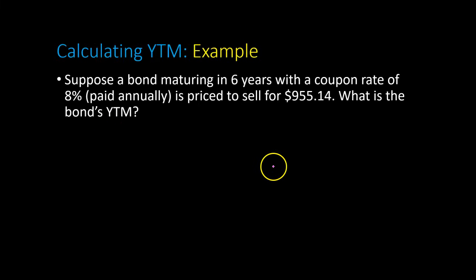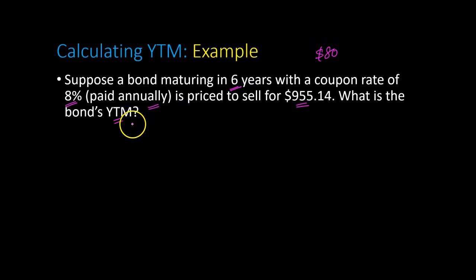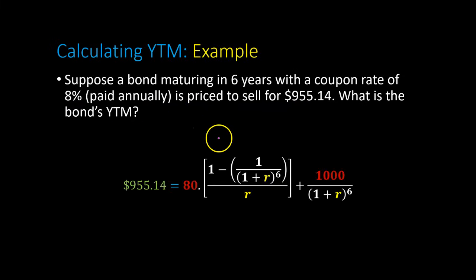So as an illustration, consider the following example. Suppose there is a bond maturing in six years, with a coupon rate of 8% paid annually, and the price of the bond is $955.14. The question is: what is the bond's yield to maturity? You can figure out the coupon payment is $80 based on a face value of $1,000. Note that the price is less than $1,000, so right off the bat you should expect the yield to maturity to be greater than 8%.